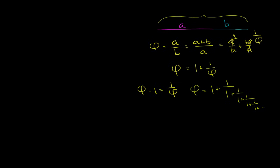We actually eventually want to figure out what phi is — the value of this weird ratio we're beginning to explore. So let's see if we can turn it into a quadratic equation that we can solve using fairly traditional methods. The easiest way is to multiply both sides by phi, and then you get phi squared is equal to phi plus 1.